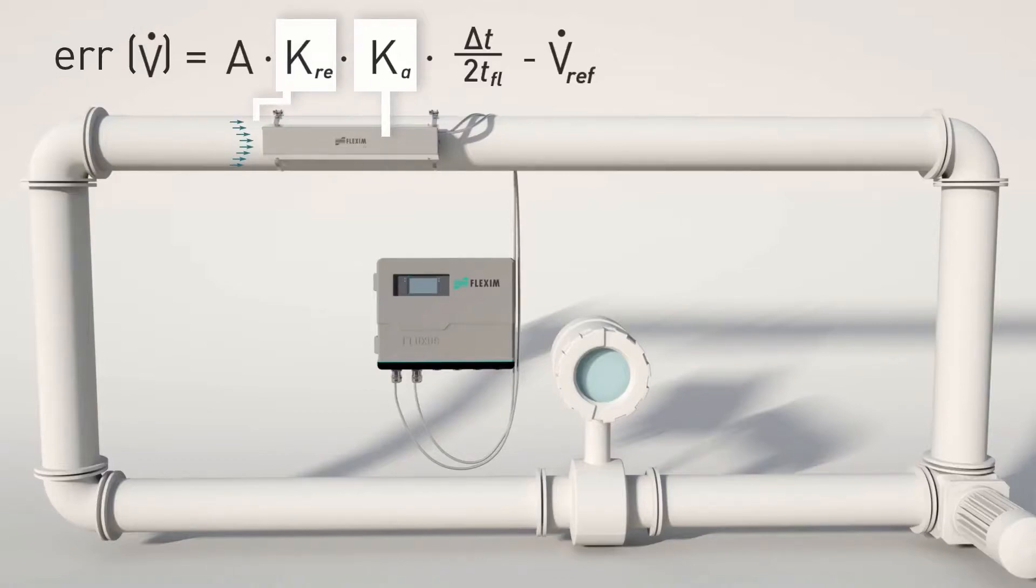Thus, the best way to achieve a higher accuracy is to do a direct transducer calibration. A more direct way of calibrating the transducers arises from the transit time measurement principle itself.